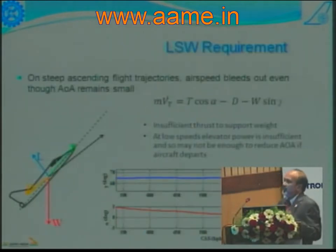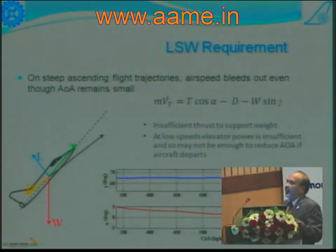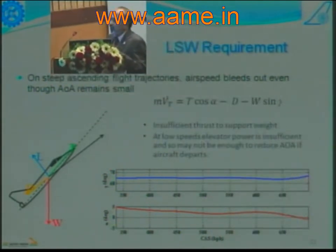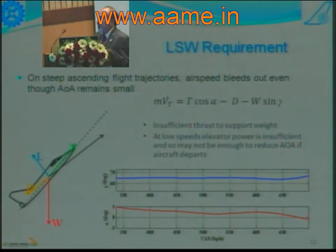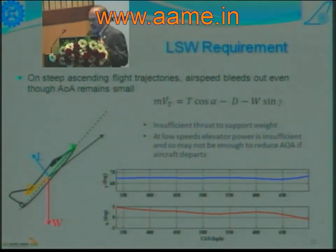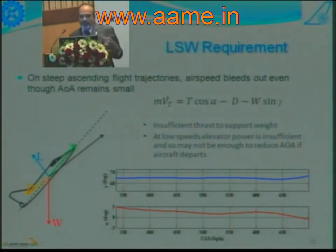There are some maneuvers — for instance the pitch case — on steep ascending flight trajectories where your angle of attack may not reach anywhere close to stall, but as you bleed out speed, your engine does not develop enough thrust to support the weight, and at the same time, because your dynamic pressure is reducing, the control power effectiveness of the elevon is not enough to push down the nose and recover from an angle of attack. Therefore, in such aircraft, you give an audible and visual warning to the pilot saying you are approaching the boundary, and if the aircraft continues to exceed this, the control system takes control, recovers it from this dangerous condition, brings it to level flight, and hands it back to the pilot.